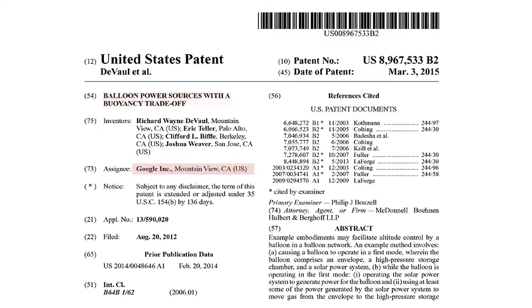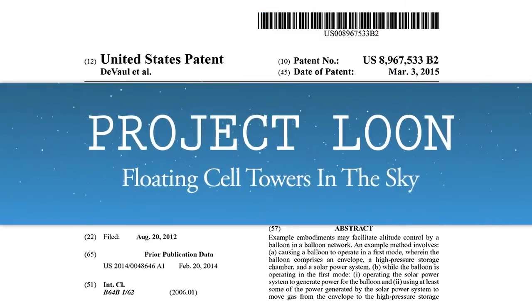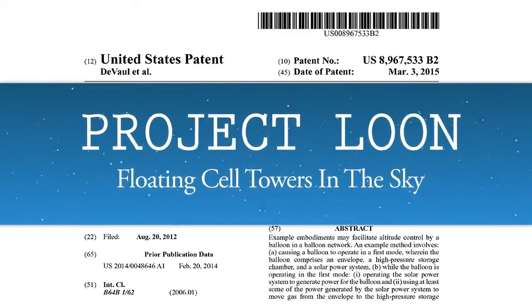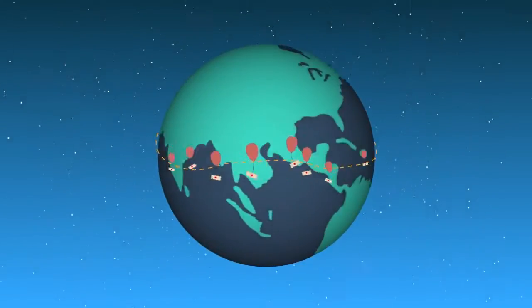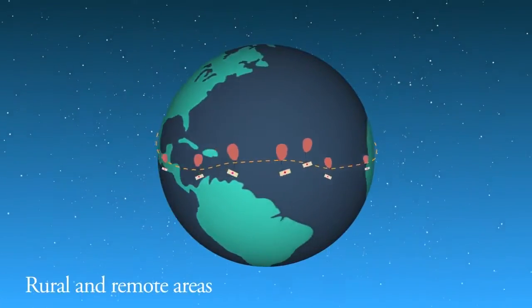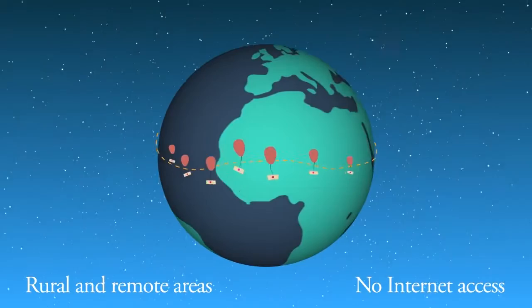Google patented an awesome technique to control altitudes of balloons for its Project Loon. Project Loon is a global network of high-altitude balloons to connect people in rural and remote areas who have no internet access at all.